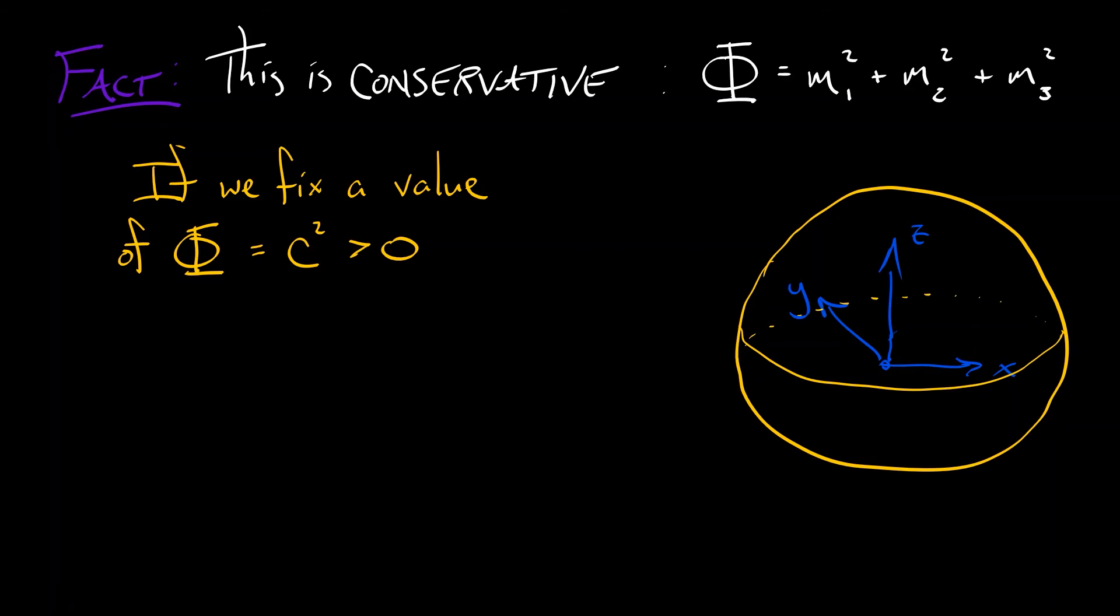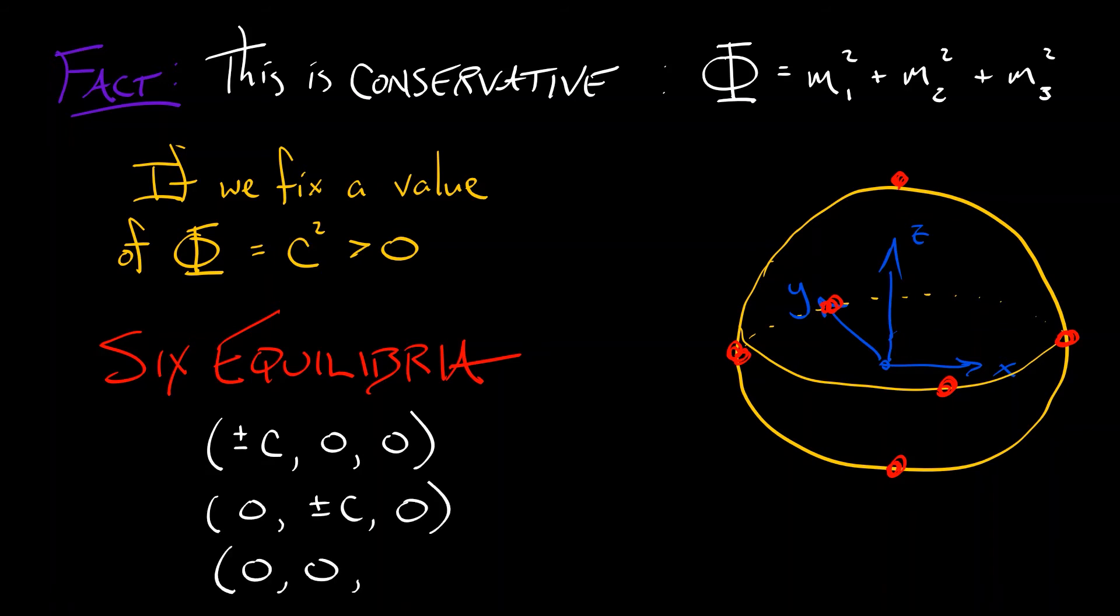Because the equilibria lie along the x, y, and z-axis, when we restrict to this surface, this sphere, we are pierced by those axes six times. We have six equilibria on this sphere. They are at plus or minus c, zero, zero, zero, plus or minus c, zero, and zero, zero, plus or minus c. And what these correspond to is rotating along the principal axes, either in a clockwise or a counterclockwise direction.